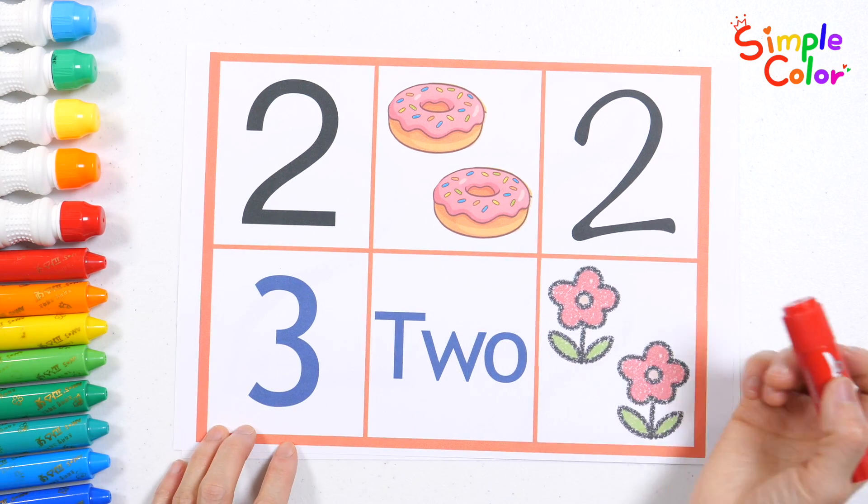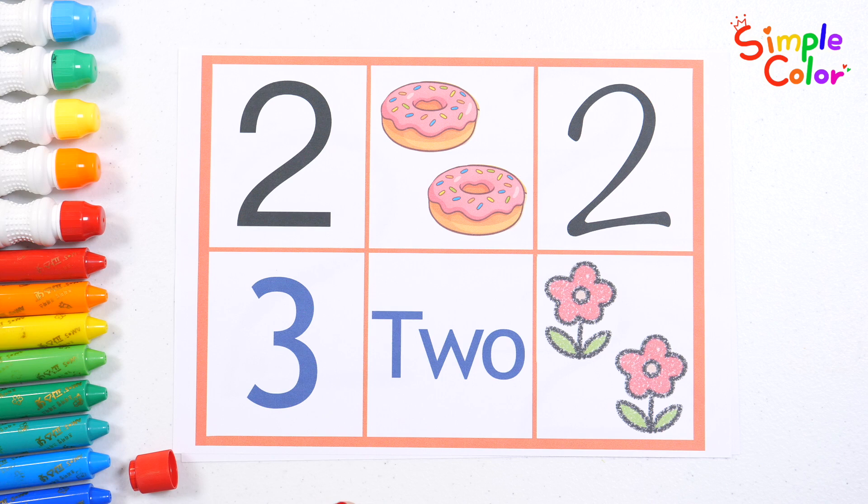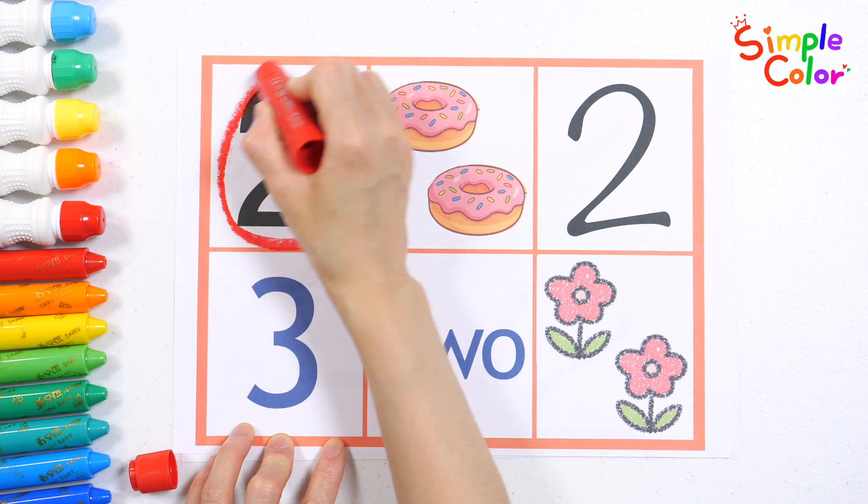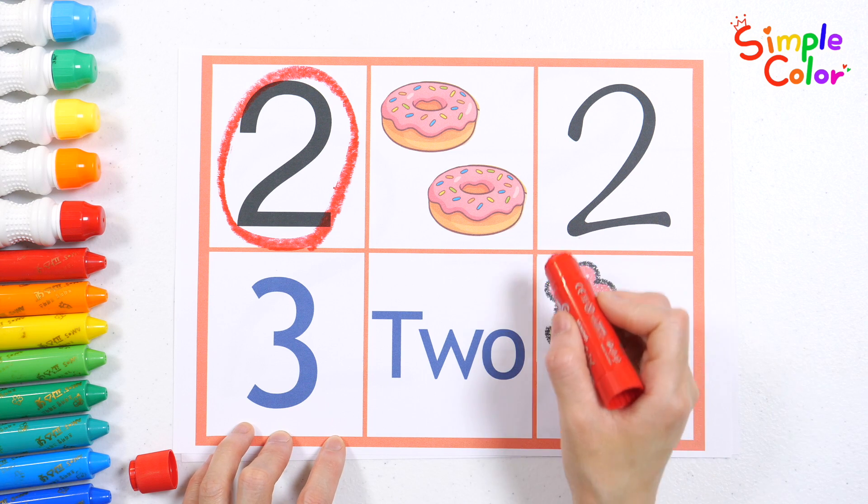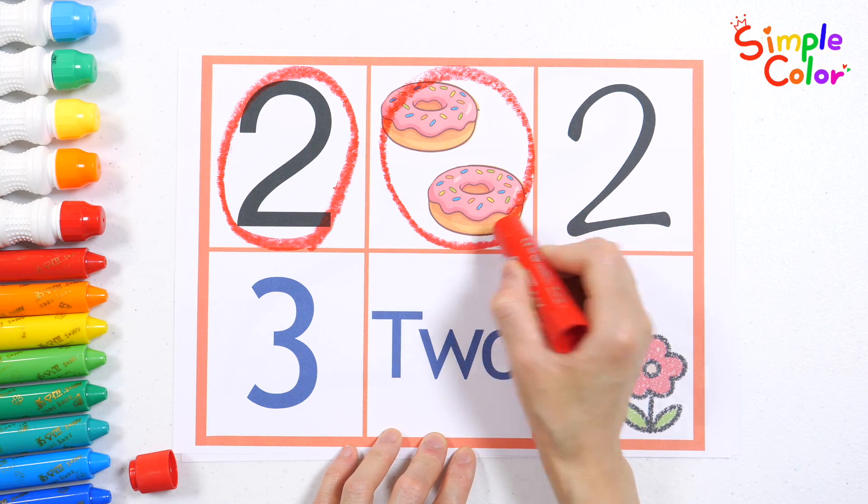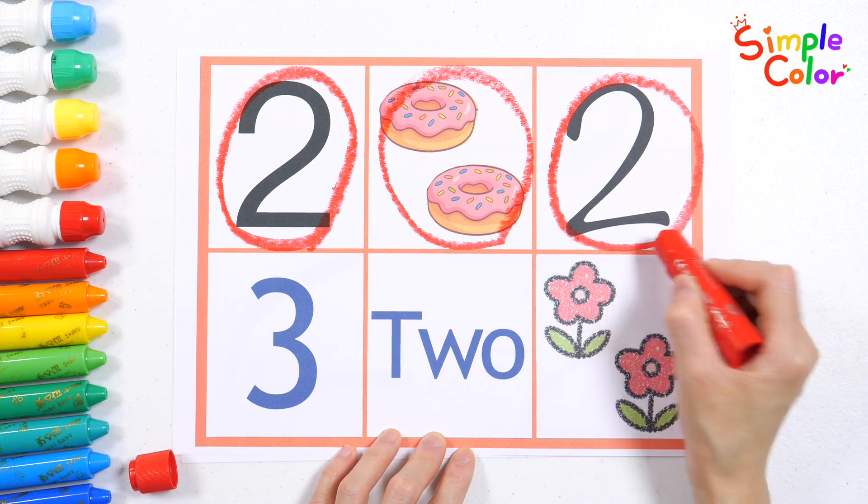Now, let's find everything that matches the number two and circle them all. That's right! Two. Let's count them. One, two. Two donuts.